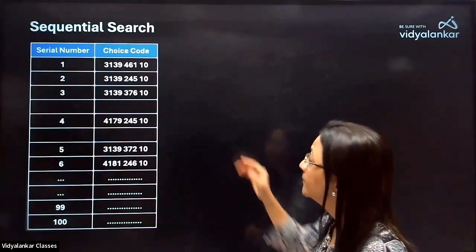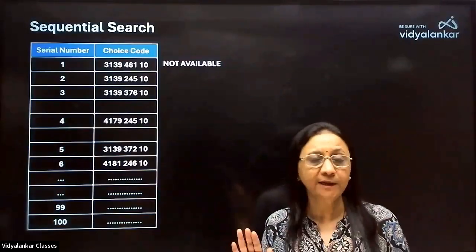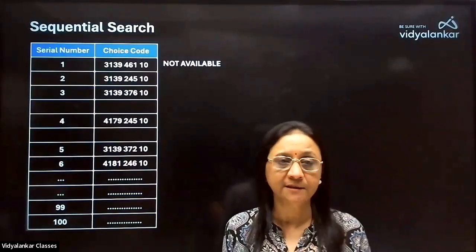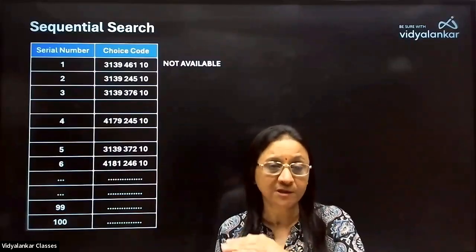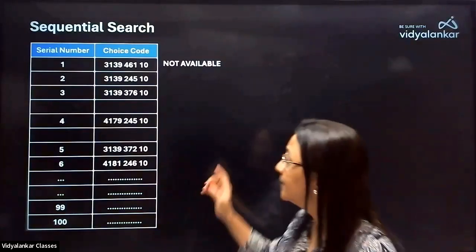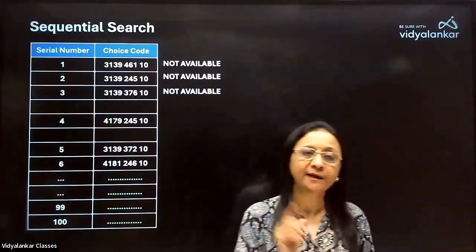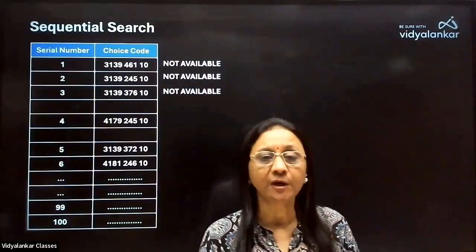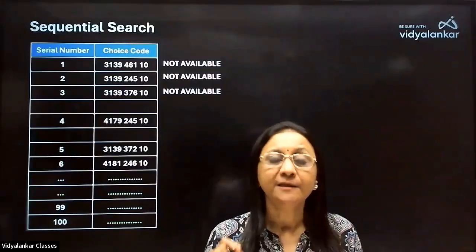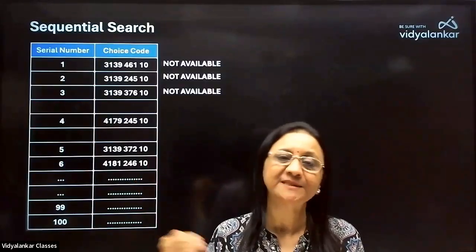For a particular student, when the program runs for allotment, it checks the very first option — is the seat available? If students above this student on merit have already occupied all the seats, the answer is no. Second option — available? No. Third option — available? No. If this student has written only three options, the outcome of the round would be no allotment. So you must write dream options along with optimistic and realistic options as well.